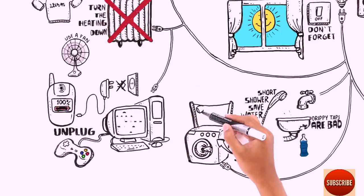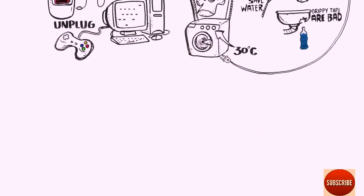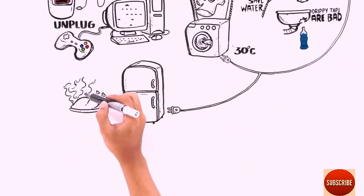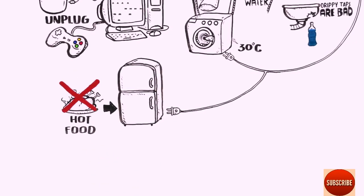Set your washing machine to wash at 30 degrees Celsius. Dry your clothes outside instead of using a tumble dryer. Close the fridge door and never put a hot meal in the fridge. It takes a lot of energy to cool it down.